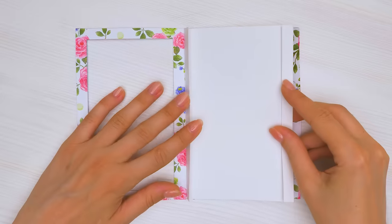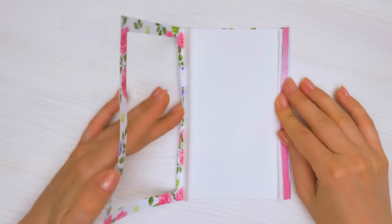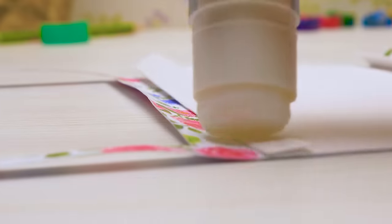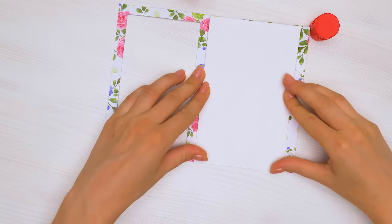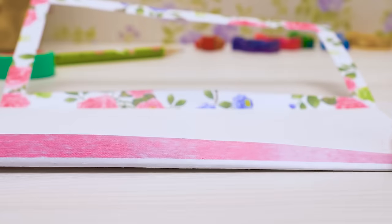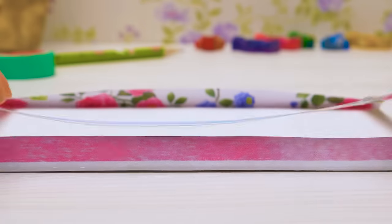Now, let's check. The paper should be hidden in the frame perfectly. Great! Now I'll apply some glue and stick it inside. Let's apply some glue to the frame as well and seal it.